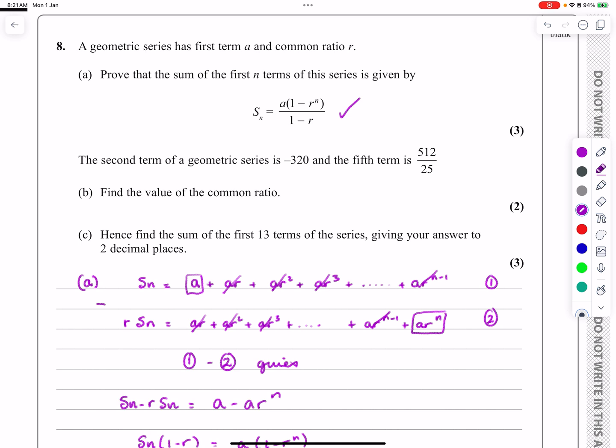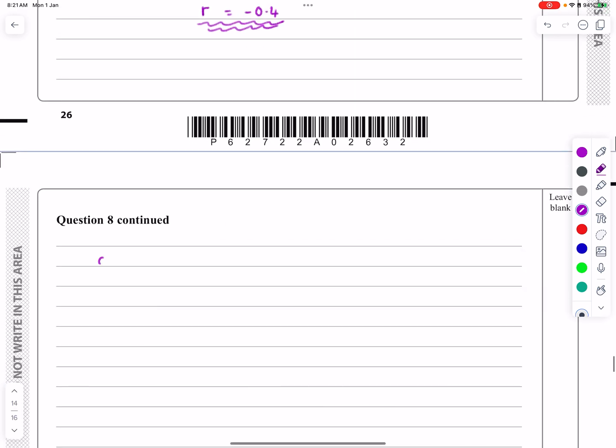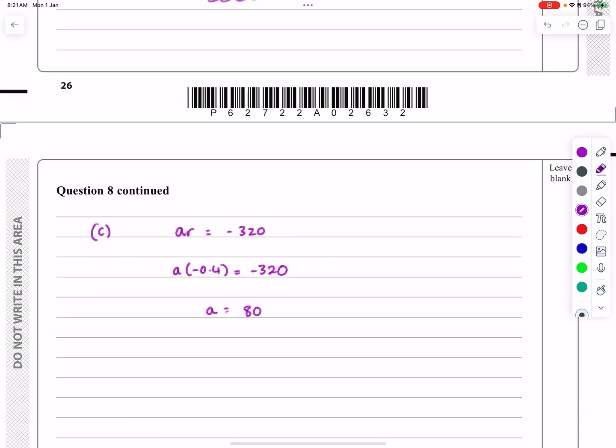It then says for part C, hence find the sum of the first 13 terms of this series, giving your answer to two decimal places. That's no problem at all. I've got to work out a first of all, so ar equals minus 320, and R is equal to minus 0.4, so that means I can work out what a is. 320 divided by 0.4 gives me 800.